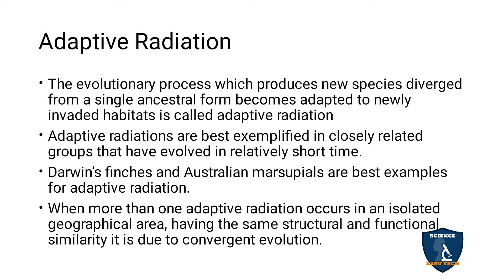Adaptive radiation is best exemplified in closely related groups that have evolved in a relatively short time period. Darwin's finches and Australian marsupials are the best examples of adaptive radiation. When more than one adaptive radiation occurs in an isolated geographical area with the same structural and functional similarities, it is due to convergent evolution.